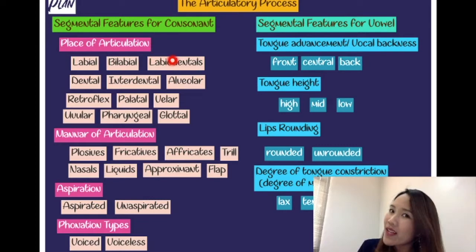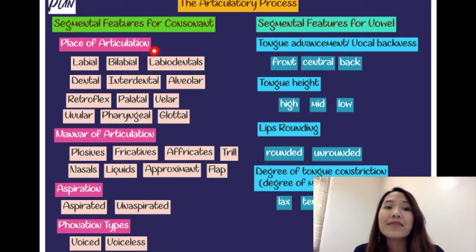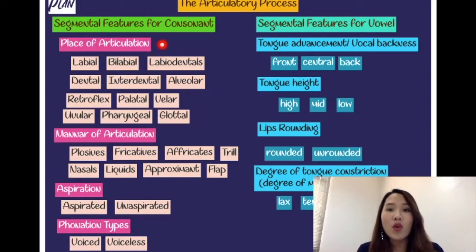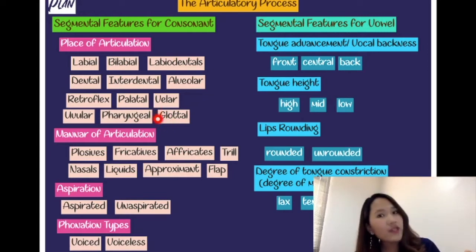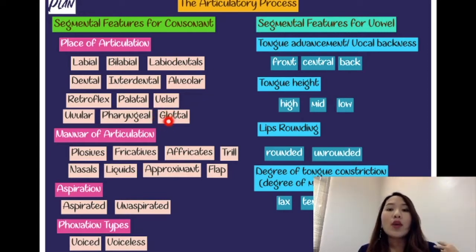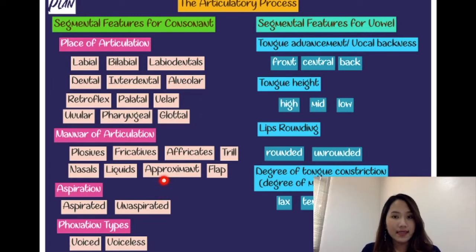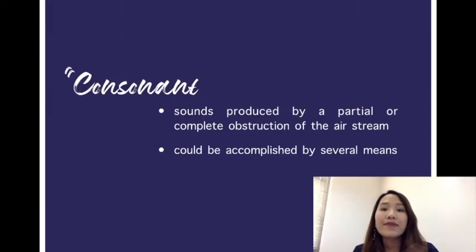The four segmental features for consonant sounds are: the first one is place of articulation, which talks about which organ you use to make sound; the second one is manner of articulation, which talks about which action you use to make consonant sounds; the third one is aspiration, which talks about air in your glottis; and the last one is phonation types, of which there are two types in English.